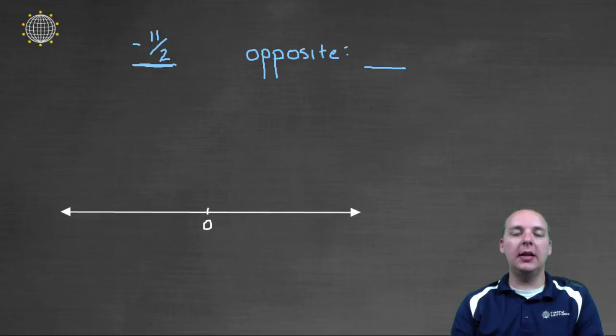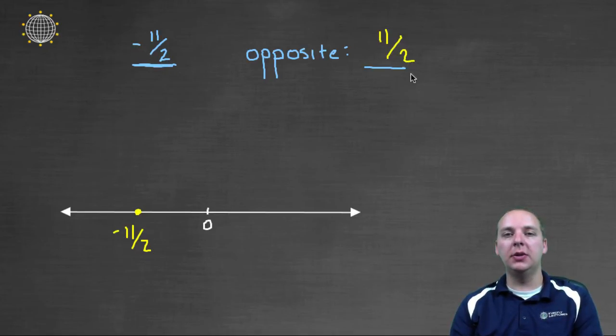And the last one, if you have negative eleven halves, that's to the left of zero. Then the opposite will be negative of a negative, which will make it positive eleven halves, which would be to the right of zero.